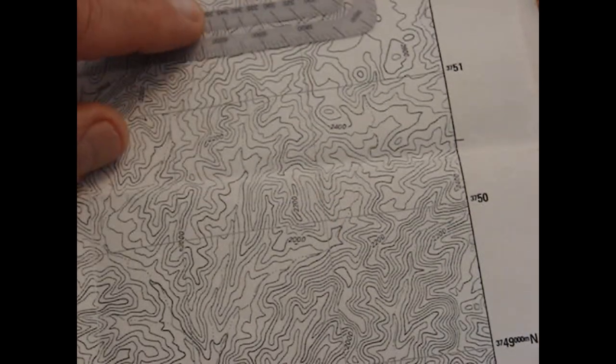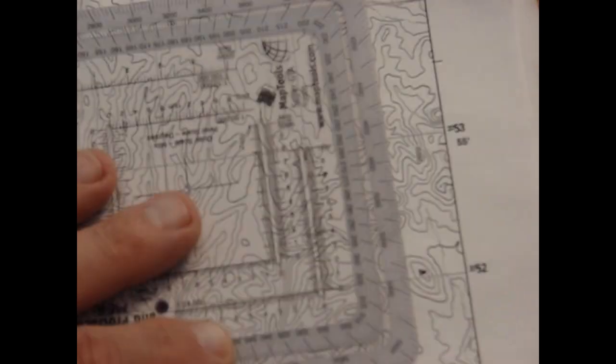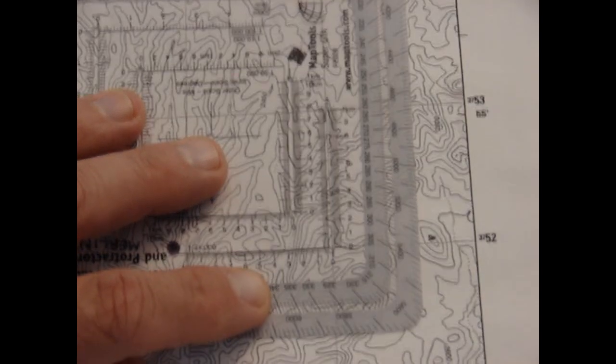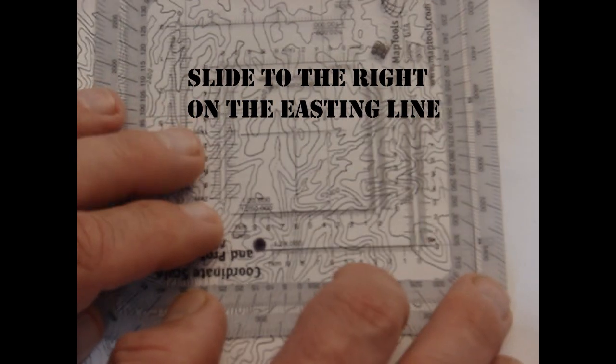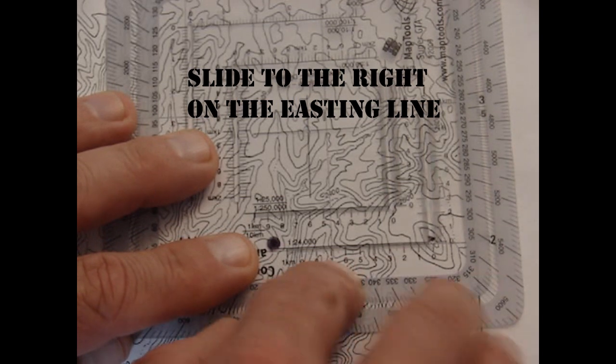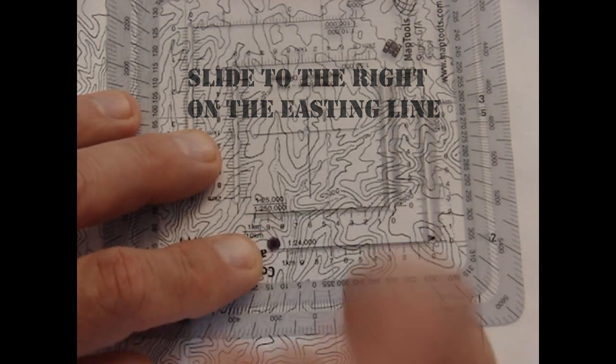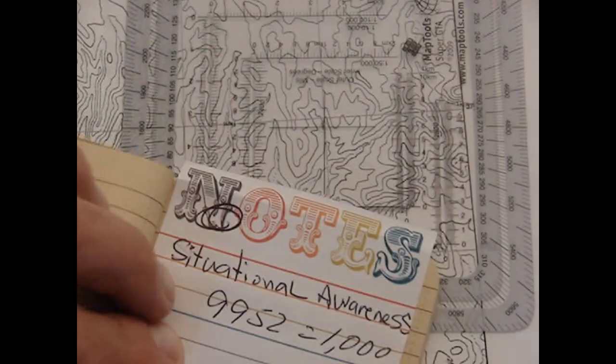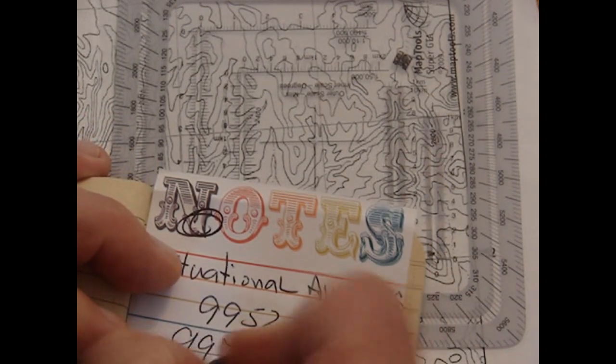So we're going to go ahead and put that on there. Let me bring that down so you can see it. We're going to go right until we find that mark there. And that puts seven. So we're going to put 70 on our northing line. So our next coordinates, being the eight-digit coordinate here, is going to be 9970.